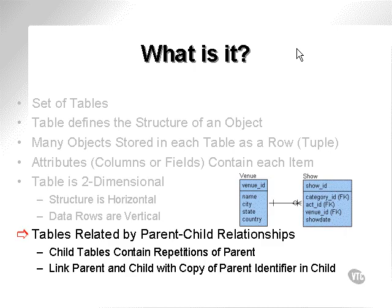In the relational database model, tables are related to each other by parent-child relationships. As you can see in the diagram, the venue and show tables are related, describing many shows for each venue. This is denoted by what is called the crow's foot. This relationship is one and only one to one, zero, or many — which means there can be many shows for a venue, no shows for a venue, or one show for a venue. You could have a venue without any shows. The child table will contain the repetitions contained within the parent object.